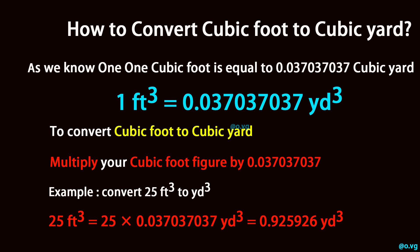Example: Convert 25 ft³ to yd³. 25 ft³ is equal to 25 × 0.037037037 yd³ = 0.925926 yd³.